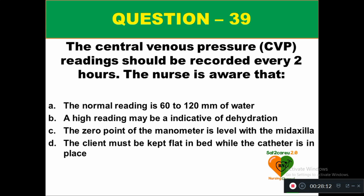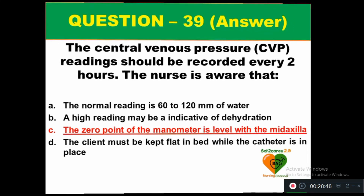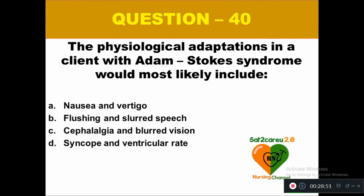Question 39: The central venous pressure (CVP) reading should be recorded every two hours because the nurse is aware that: option A the normal reading is 60 to 120 mm of water, option B a high reading may be indicative of dehydration, option C the zero point of the manometer is level with the mid-axilla, option D the client must be kept flat in bed while the catheter is in place. The right answer is option C — the zero point of the manometer is level with the mid-axilla.